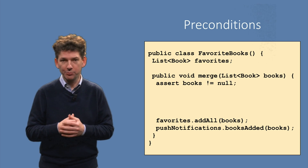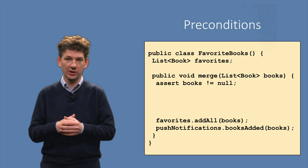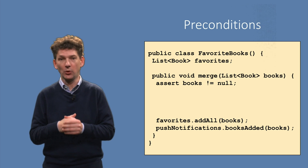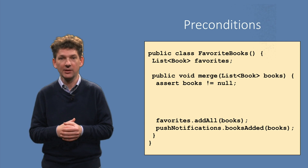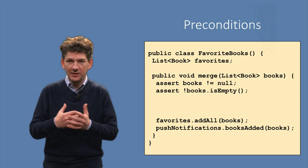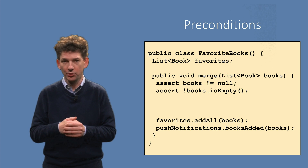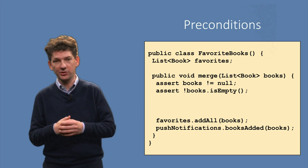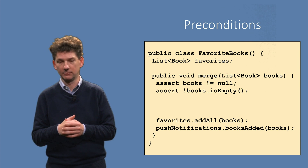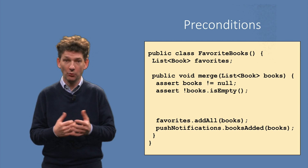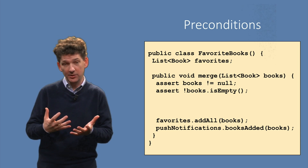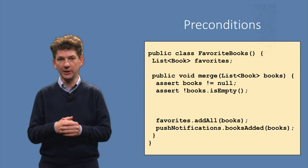Furthermore, the merge method should inform its listeners about successful book additions. An addition is successful if there is at least one book in the list. Let's add this as an assertion too. But the assumptions are not just about the input parameter books. The method body also uses the favorites instance variable. Can the list of favorites be null? No, it cannot be null, since then we would get a null pointer exception when trying to add books to it. This we can also encode as a precondition.